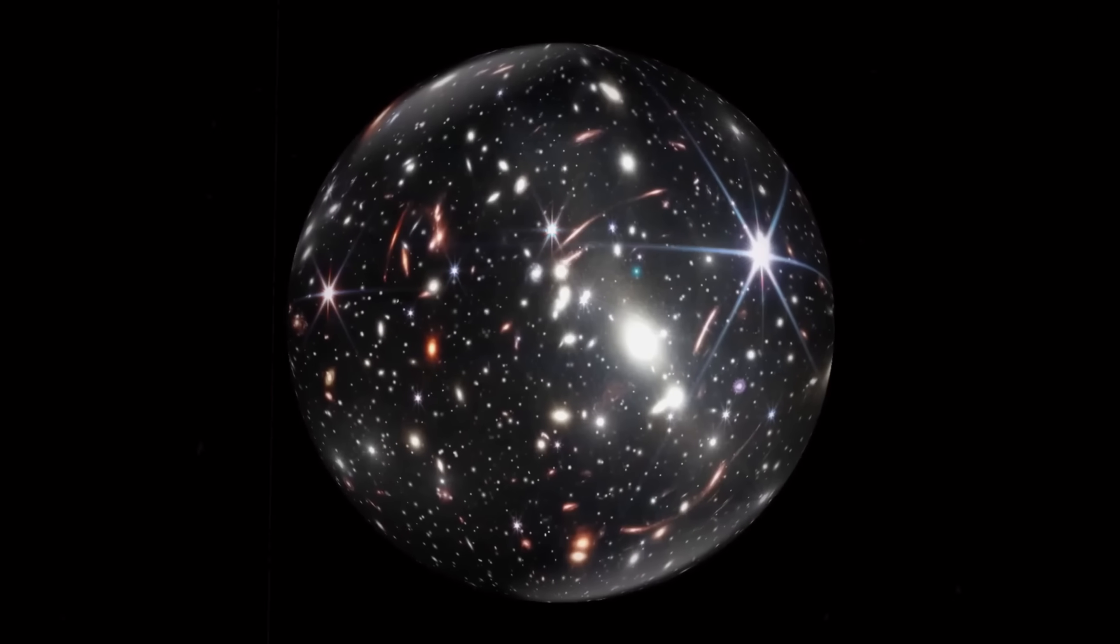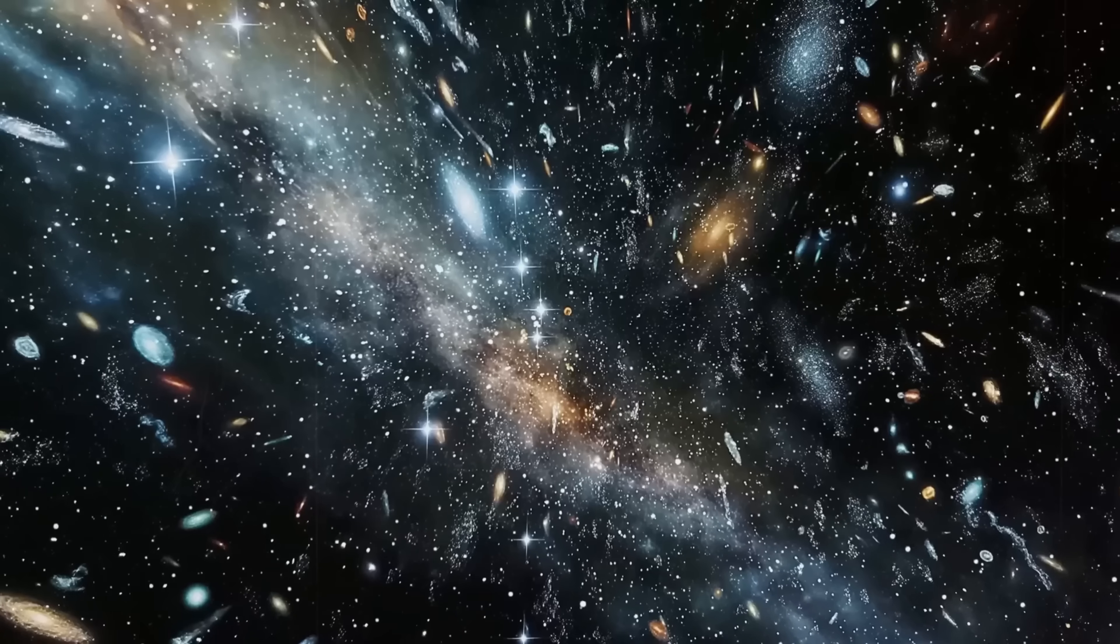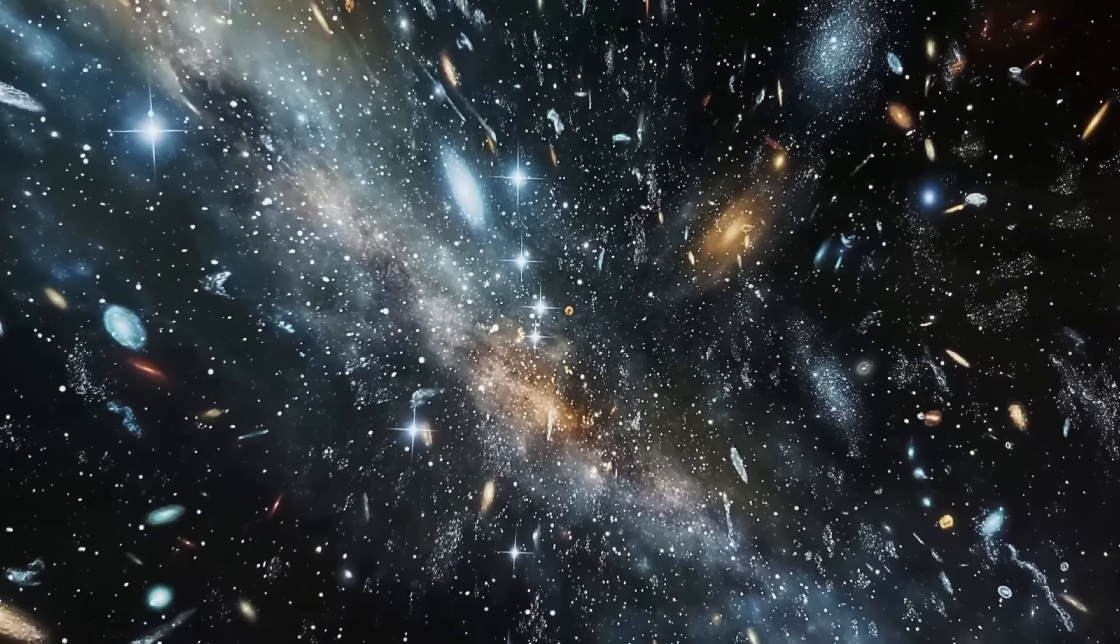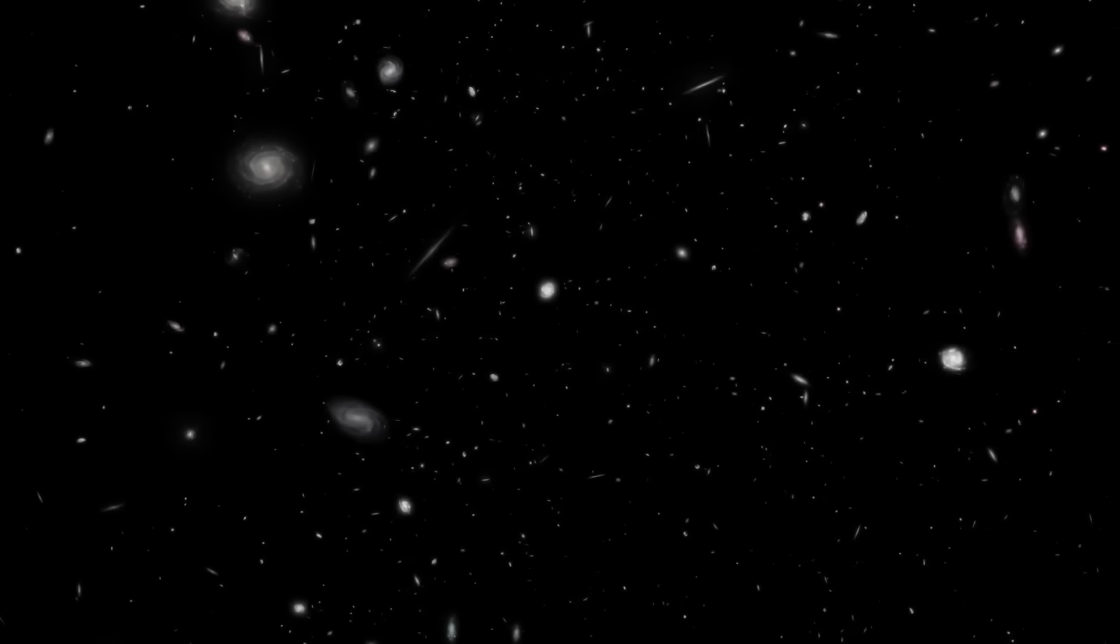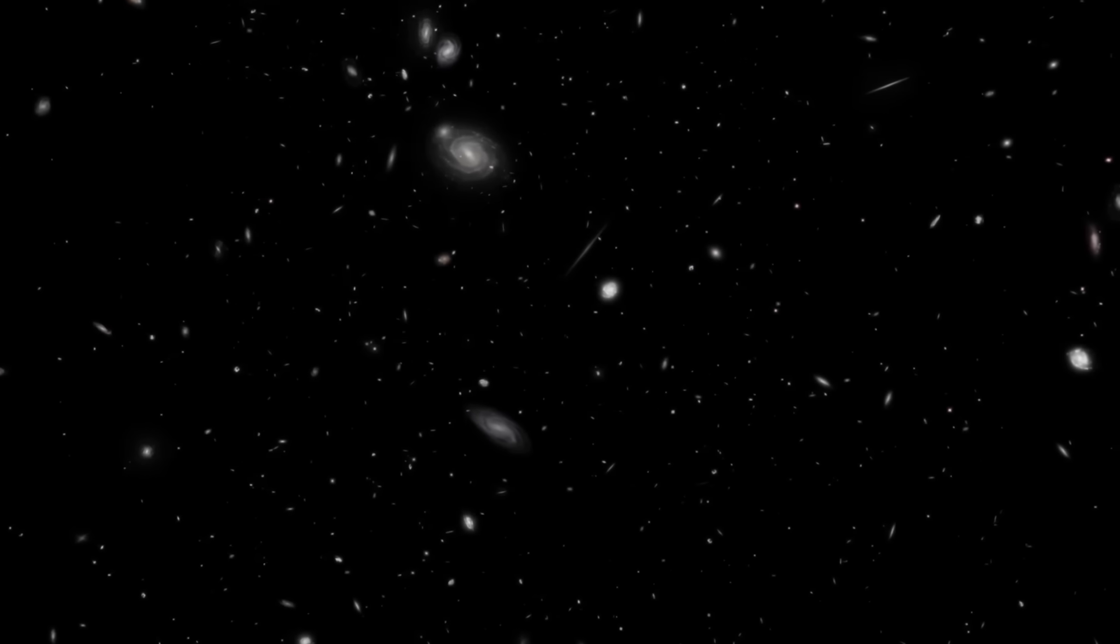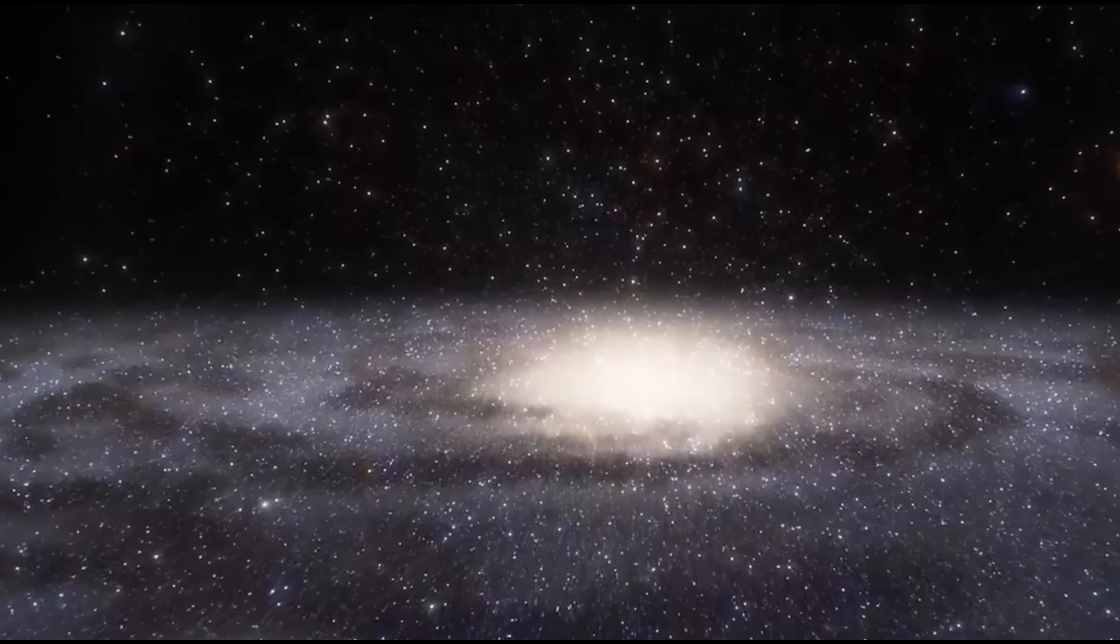Even more mind-boggling is the idea that the universe may have a preferred axis. Observations of large-scale cosmic structures suggest that galaxies aren't randomly scattered as expected, but may follow a subtle alignment. This cosmic anisotropy defies the cosmological principle, which assumes that the universe is uniform in all directions. If a hidden directionality exists, it could mean that unknown physics, possibly linked to our universe's formation inside a black hole, is at play on the largest cosmic scales.